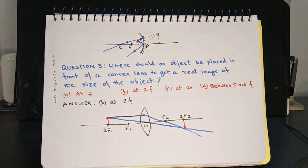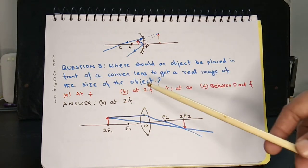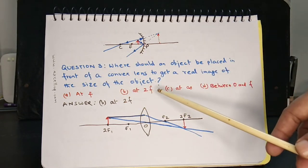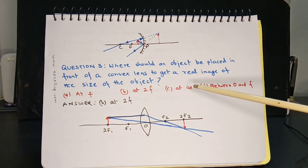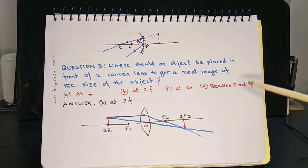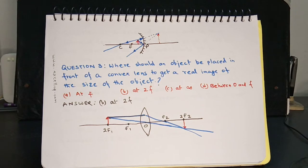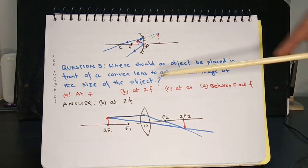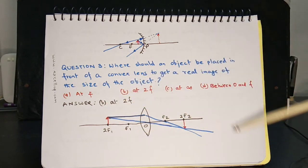Question 3: Where should an object be placed in front of a convex lens to get a real image of the same size as the object? Options are: a) at F, b) at 2F, c) at infinity, d) between O and F. The answer is b) at 2F.